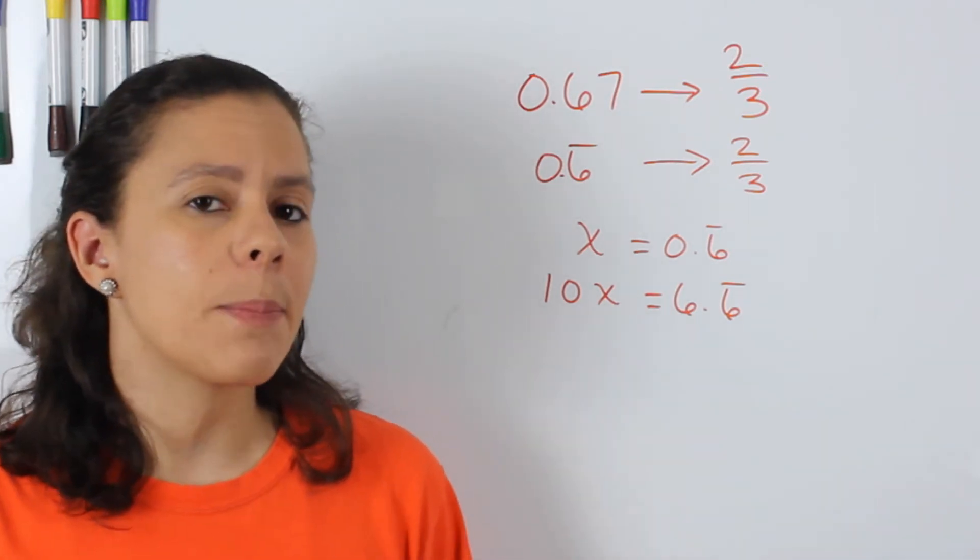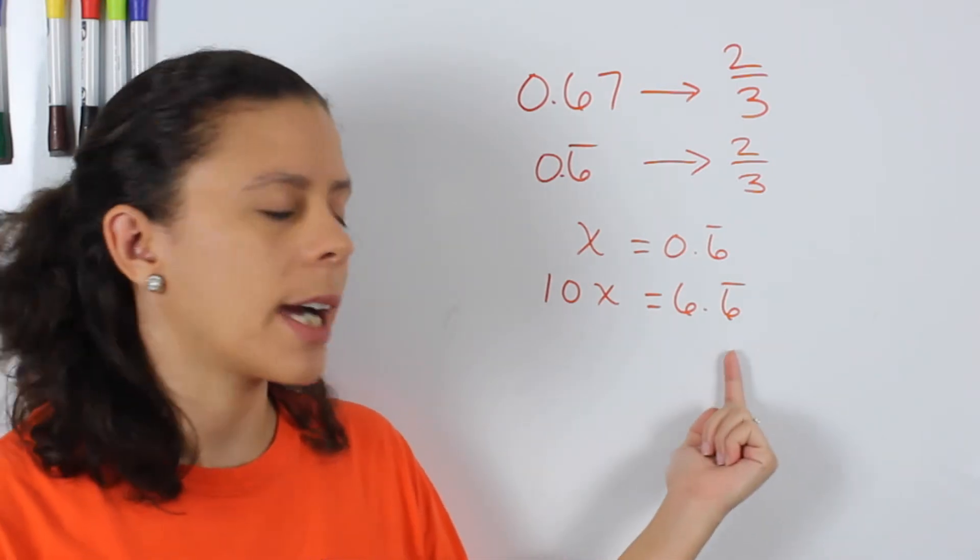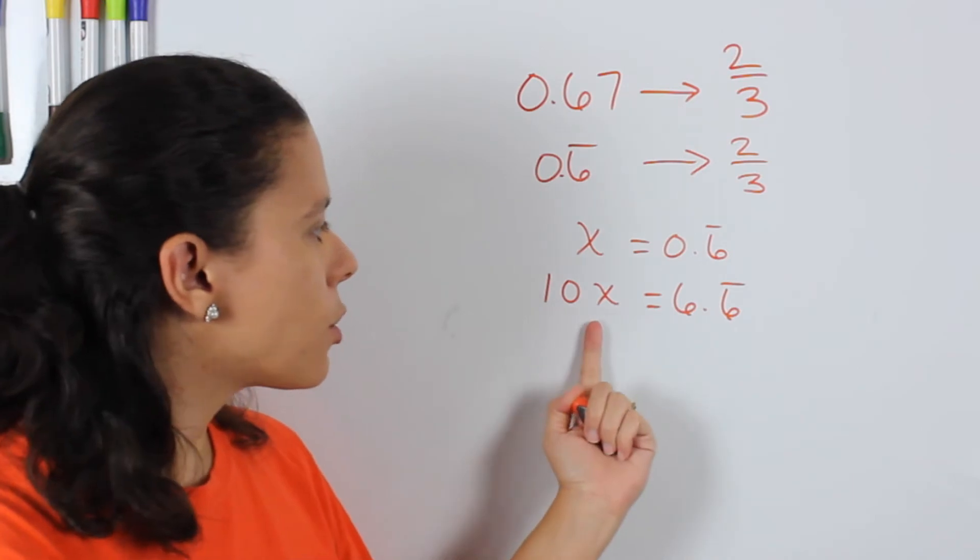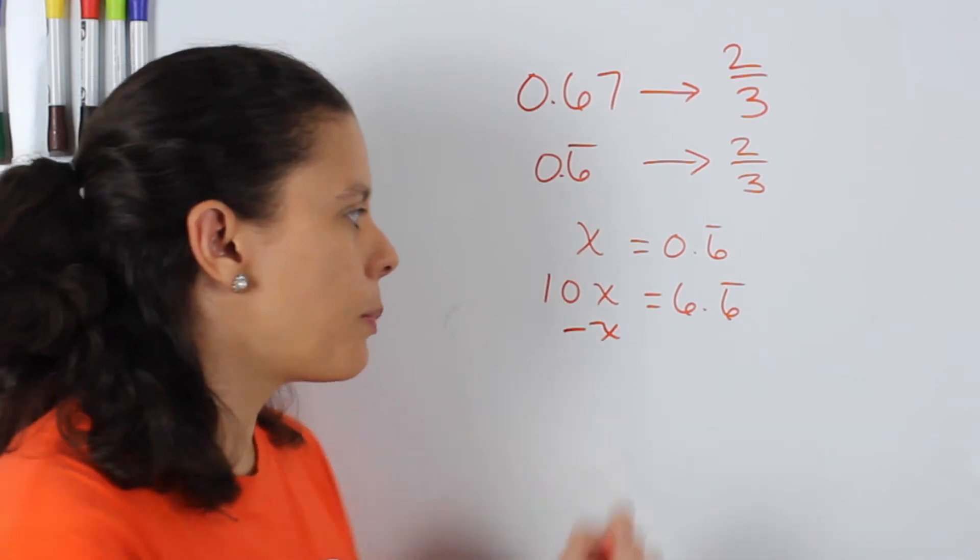The other way that you can think about this is that whatever you subtract on one side, you have to subtract on the other side. For example, here, I am going to subtract x, and here I am going to subtract 0.6 repeating.